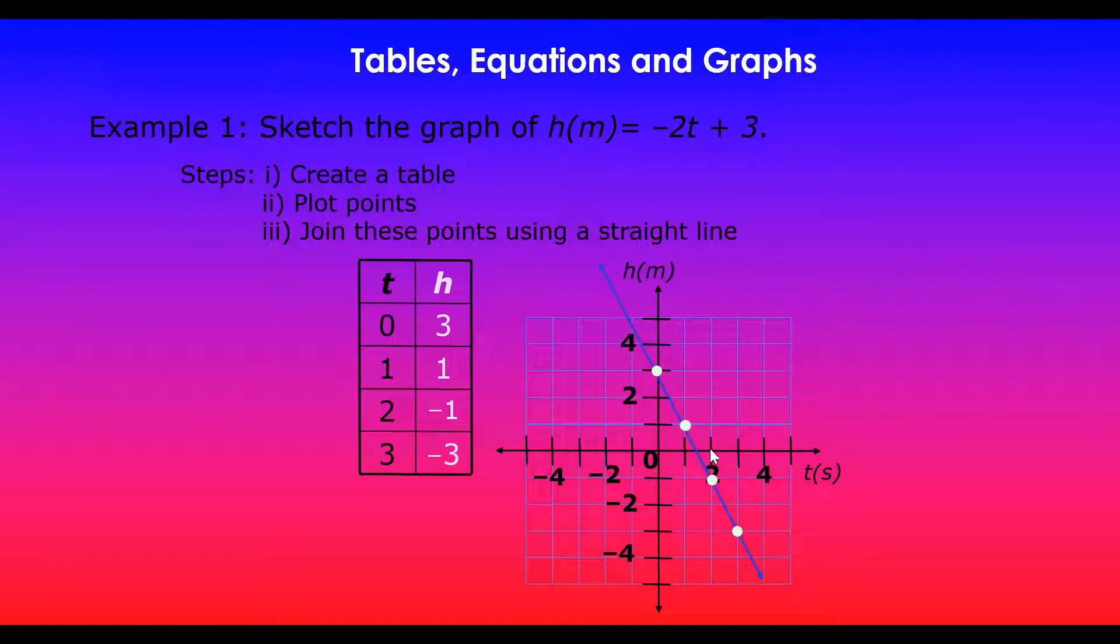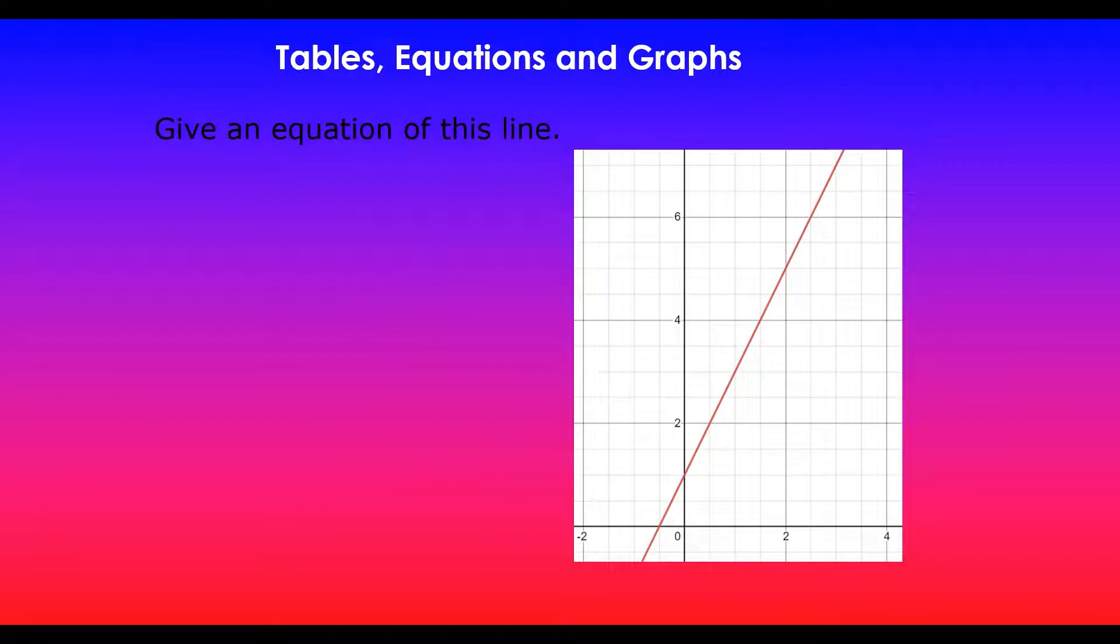1, 1, 2, negative 1, and then 3 with minus 3, which is over here. And then you just join these using a straight line. And there you have it - that's your graph of minus 2t plus 3.